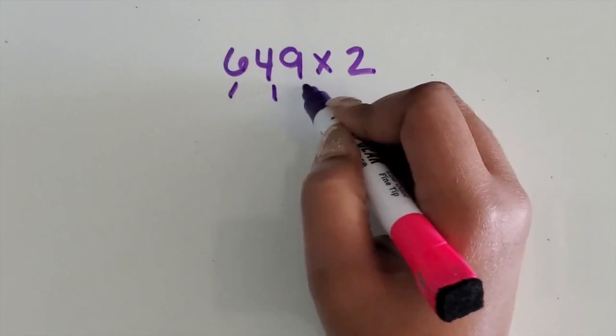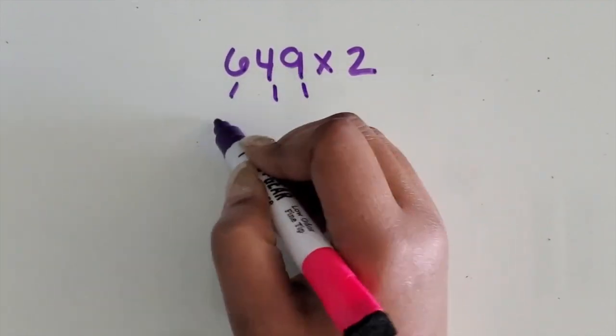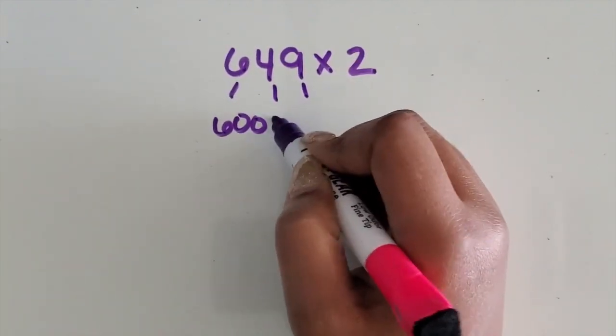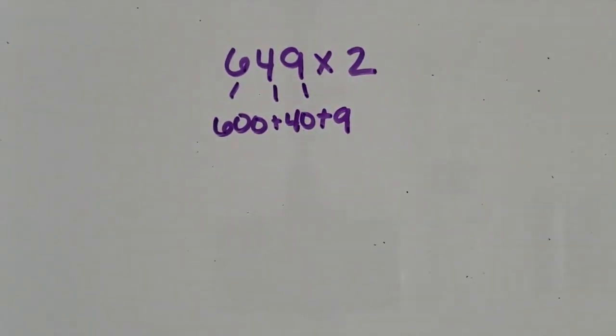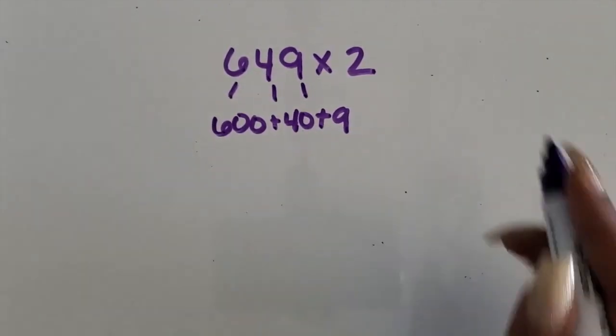So again, have them decompose that three-digit number into hundreds, tens, and ones. They could, of course, decompose it into a different number. This is just one way to decompose that multi-digit number.